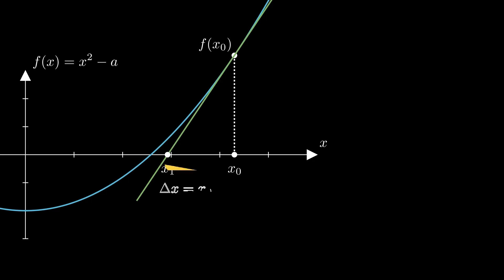The slope of tangent at x0 is represented by f'(x0). By rearranging the variables, we arrive at this equation. For this case, f(x0) = x0² - a, and f'(x0) = 2x0.